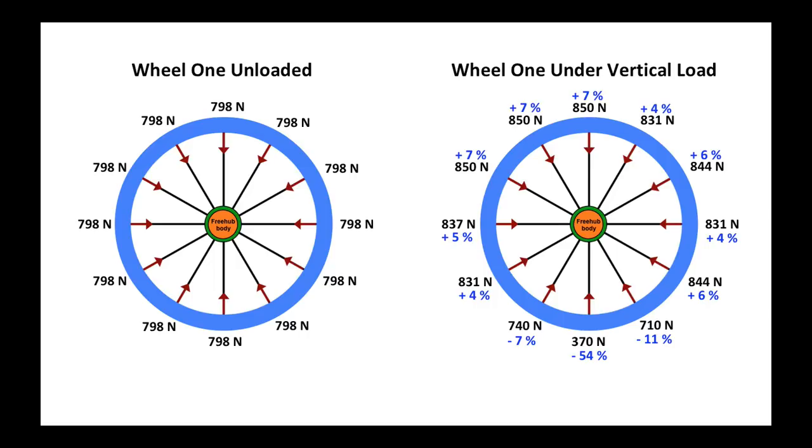This is the actual data. We started with spokes that had 798 newtons, approximately 80 kilograms of force, and you see on the right the percentage changes in the spokes as they go around the wheel. The big change occurs at the bottom.